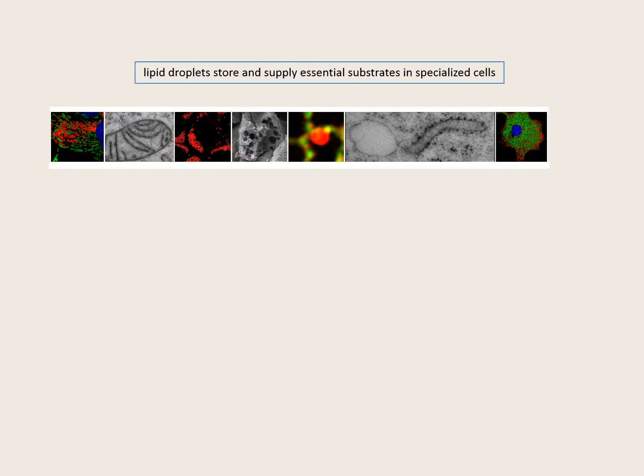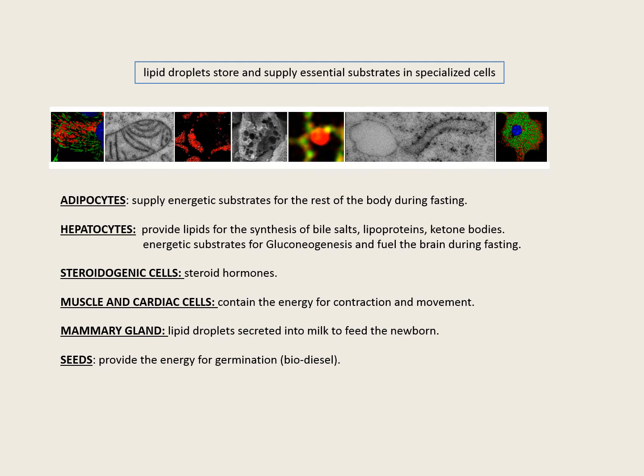Once they are formed, lipid droplets participate in many crucial functions in specialized cells. In adipocytes, lipid droplets supply the energetic substrates used for the rest of the body to produce energy during fasting. In hepatocytes, they provide lipids for the synthesis of bile salts, lipoproteins and ketone bodies. In muscle and cardiac cells, lipid droplets contain the energy that allows contraction and movement. In mammary gland, lipid droplets are secreted into milk to feed the newborn. And in seeds, lipid droplets provide the energy used for rapid regeneration.